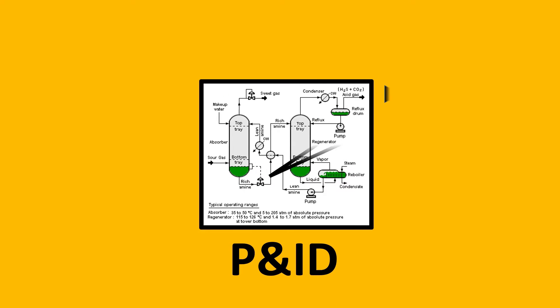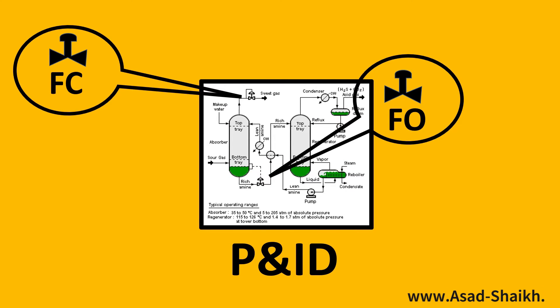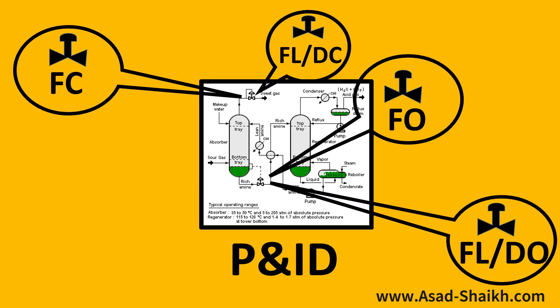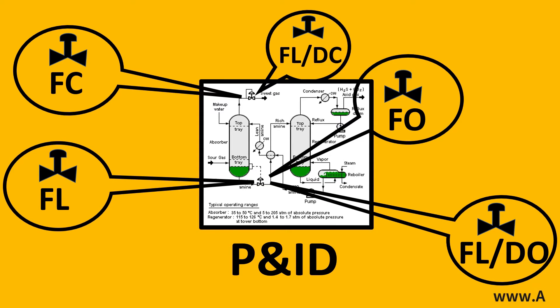Here's an example of a P&ID where you would have symbols such as FO, FC, FLTC, FLDO and just FL. All these are control valve failure modes. Let us look at these amazing examples of how you can design a control valve to fulfill these needs.